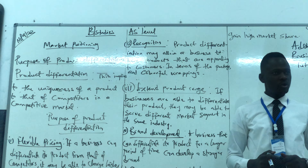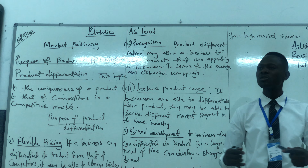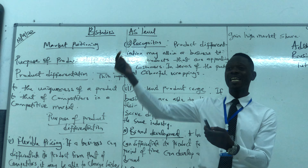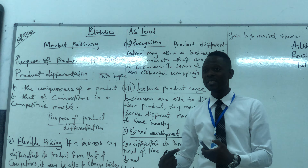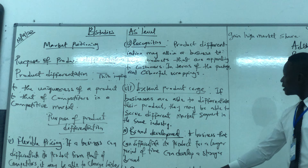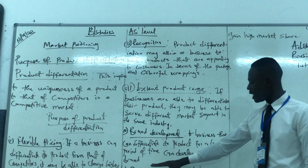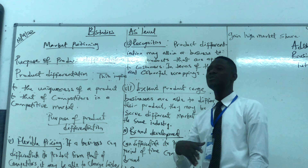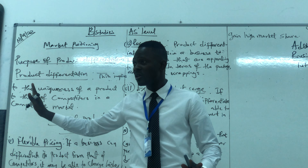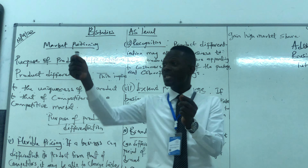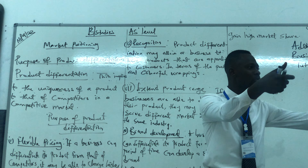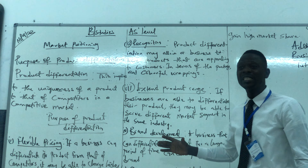The fourth purpose is brand development. A brand is the unique name of a product. If you are able to differentiate your product from that of competitors over a longer period of time, it will allow you to have a very strong brand. Look at Apple — it's a very strong brand. Why? Because it's able to differentiate its product from that of competitors. Apple has been there for so long, and its ability to differentiate its product in that competitive mobile market has made it what it is today. That's brand development.